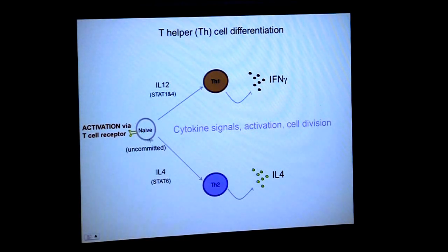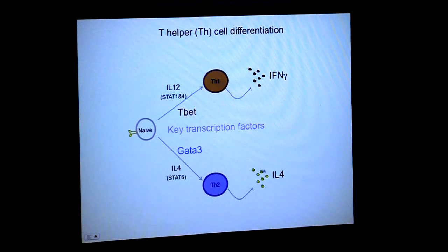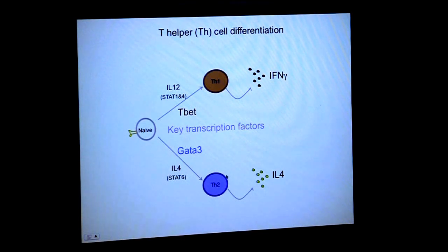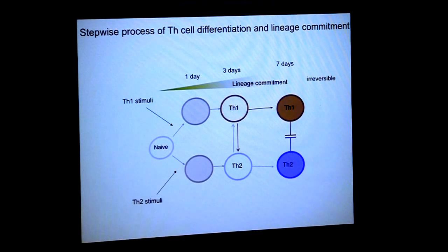For TH1 cells, activation by the T cell receptor combined with IL-12 — a very important cytokine — leads to signaling through STAT1 and STAT4, and you make TH1 cells which produce interferon gamma. For TH2 cells, IL-4 polarizes them towards TH2 and they end up producing IL-4 as well. These cells are under the regulation of two well-defined master regulators: TH1 cells are under TBET, and TH2 cells are under GATA3. These drive differentiation into TH1 and TH2 and define them.